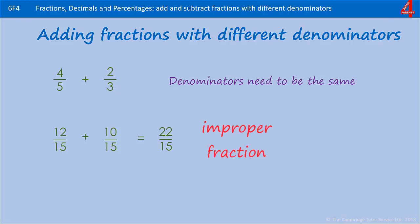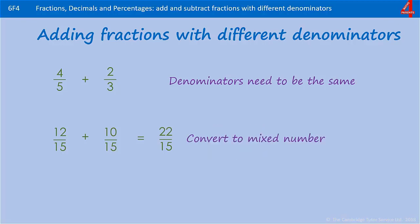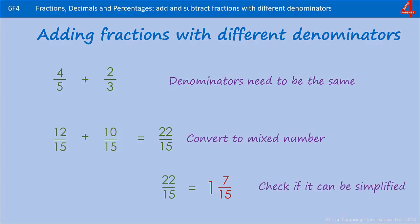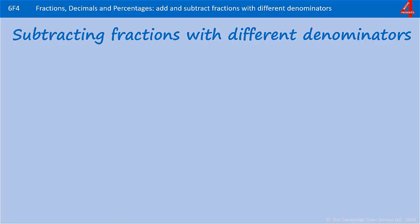You can see that you have an improper fraction, so we're going to convert this to a mixed number. How many 15s are there in 22? We can get 15 out of 22 once. How many fifteenths are left over? 22 take away 15 is 7, so the answer is 1 and 7 fifteenths. Again, check if it can be simplified, but it can't.